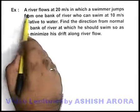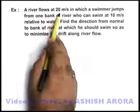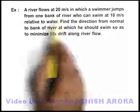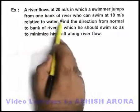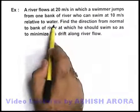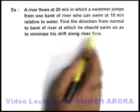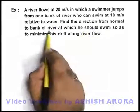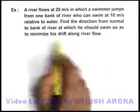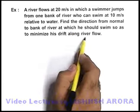In this example, we are given that a river flows at 20 meters per second, in which a swimmer jumps from one bank of the river, who can swim at 10 meters per second relative to water. Find the direction from the normal to the bank of the river at which he should swim so as to minimize his drift along the river flow.